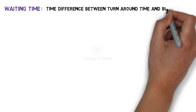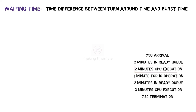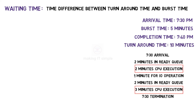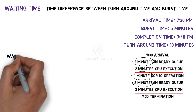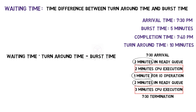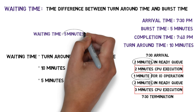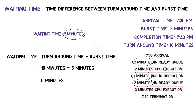Next we have waiting time — it is the difference between turnaround time and burst time. Our process spent 10 minutes in the complete cycle, but was actually executed by the CPU for only 5 minutes, which is the burst time. The rest of the time it spent elsewhere — that time is the waiting time. To calculate it, subtract burst time from turnaround time: 10 minus 5 gives us 5 minutes. So the waiting time for our process is 5 minutes. Like turnaround time, waiting time is also a duration, not a point in time.